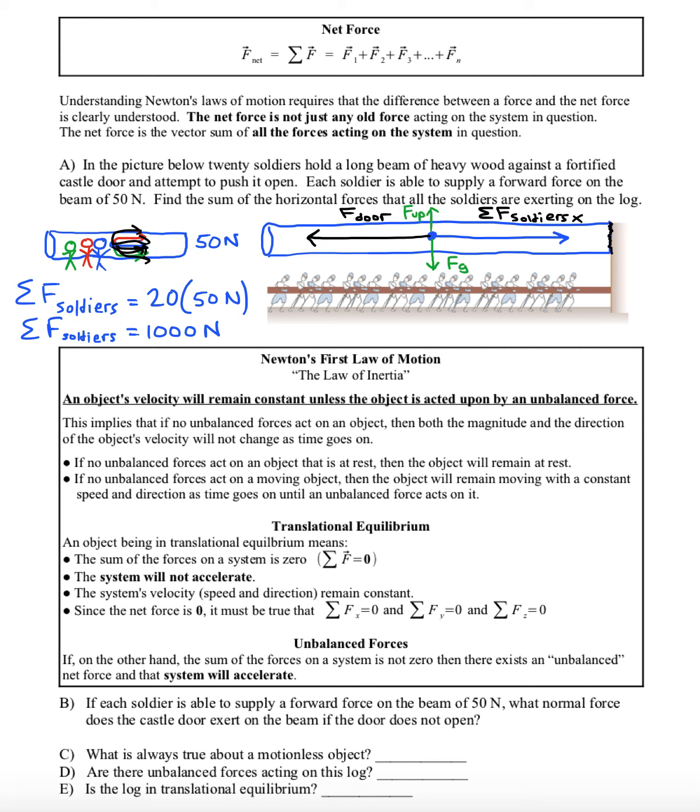So what do you notice about the forces in the diagram that I've drawn? Well, one thing that jumps out is that the force pushing the beam to the right is canceled by the force pushing the beam to the left, and that's a reason why it doesn't crash through the door. Also, the force of gravity that pulls the beam down is canceled by a force supplied by the soldiers through their efforts, and that's why the log doesn't crash to the ground.